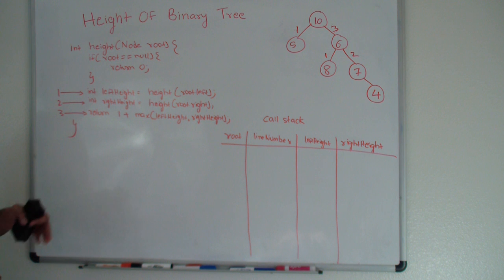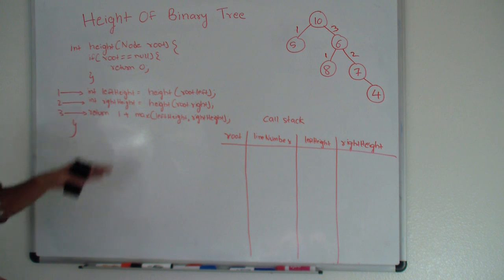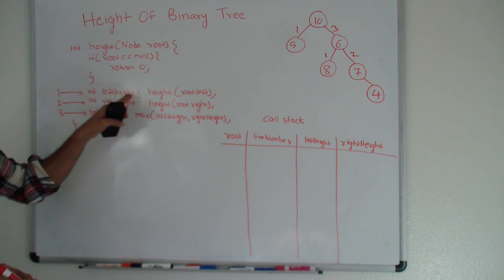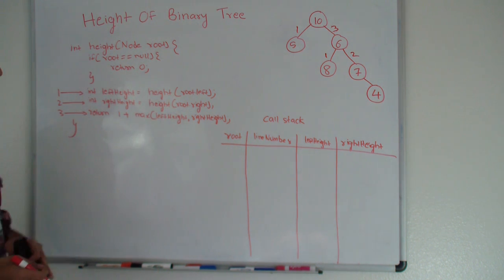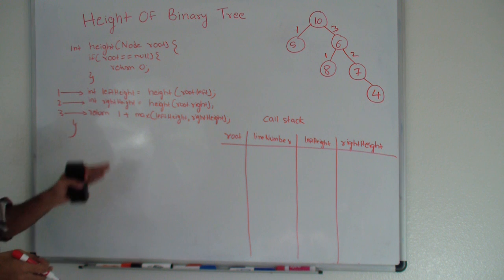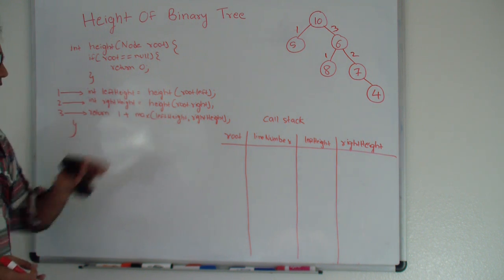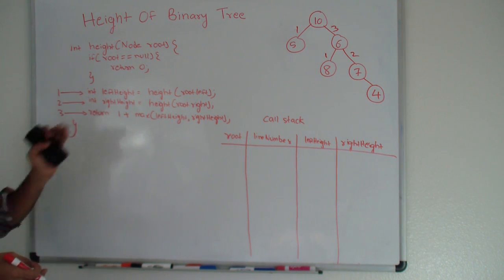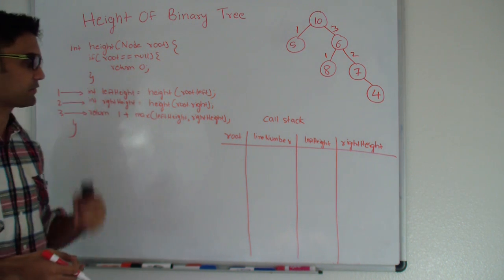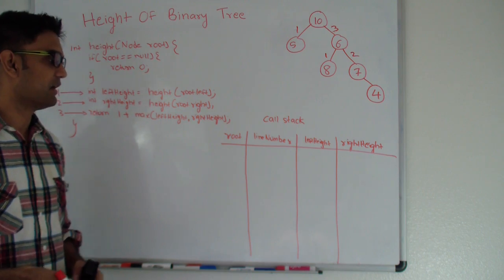I have code written here which I just described: if root is null return 0; otherwise get the height of the left side, get the height of the right side, get the max of left or right, add 1 to it, and return this to the calling function.